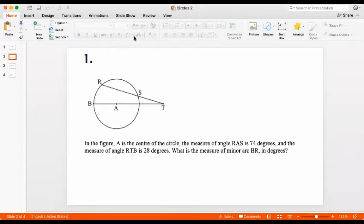Let's start with question one. In the figure, A is the center of the circle. The measure of angle RAS is 74 degrees. So let's draw that. And this angle is 74 degrees and the measure of angle RTB is 28. This angle is 28 degrees.